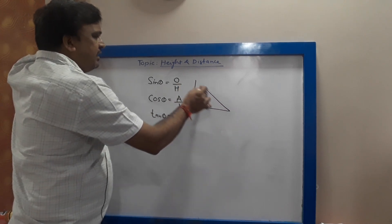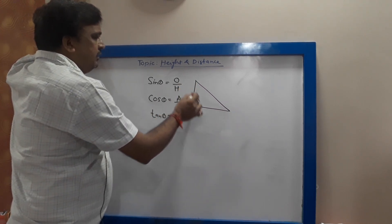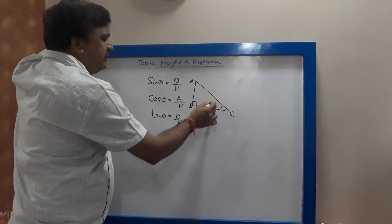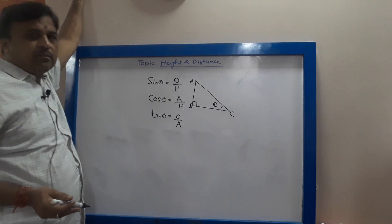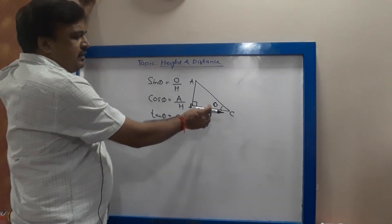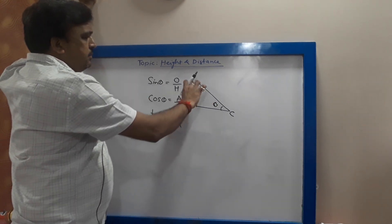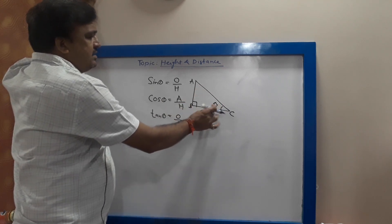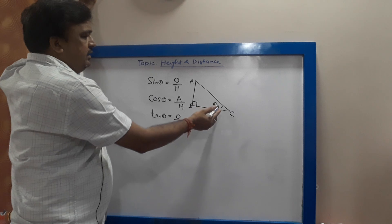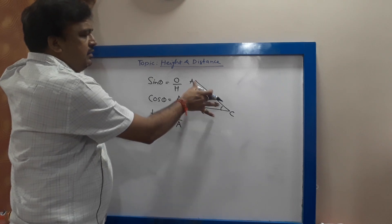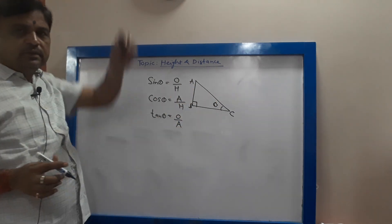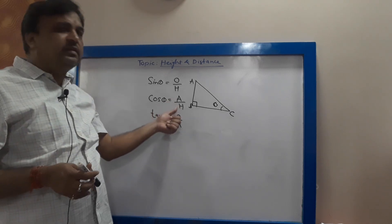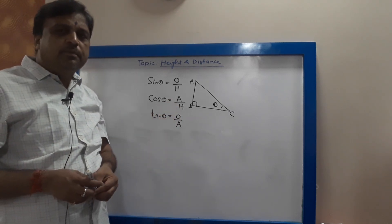In this right angle triangle ABC, B is 90 degrees and the reference angle is Theta. With this reference angle Theta, Sin will be opposite upon hypotenuse — that is AB upon AC. Cos will be adjacent BC upon AC. And Tan will be AB upon BC.